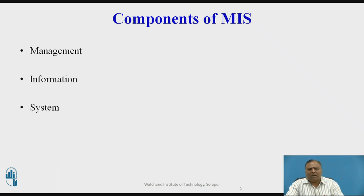Information: Data must be distinguished from information, and the distinction is clear and important. Data are facts and figures that are not currently being used in the decision-making process and are usually taken from historical records that are recorded and filed without immediate intent to retrieve them. Information consists of data that have been retrieved, processed, and otherwise used for informational or inference purposes, as a basis for forecasting or decision-making regarding any business unit.